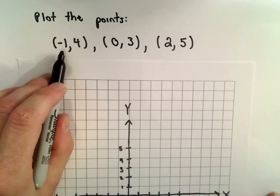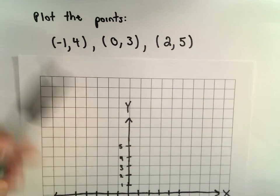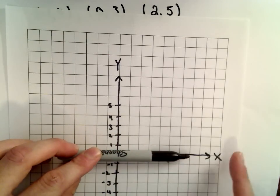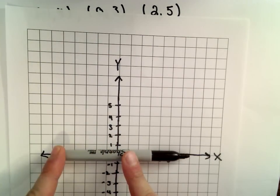The first coordinate tells you how far you move along the x-axis in the horizontal direction. If it's positive, we move to the right; if it's negative, we move to the left.